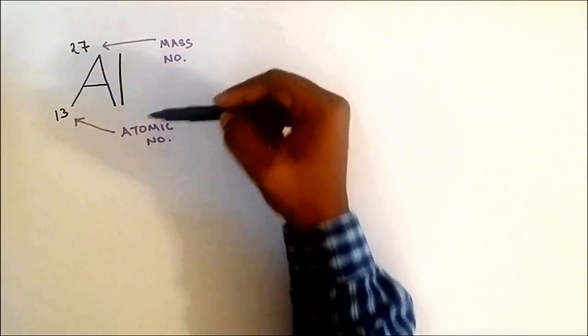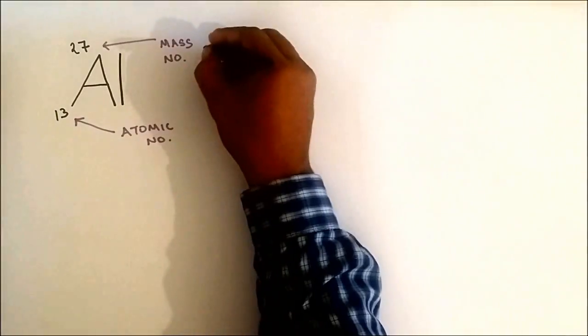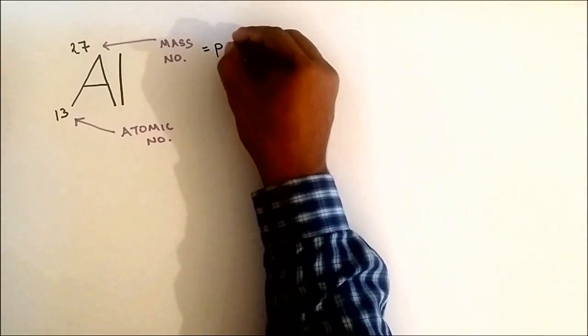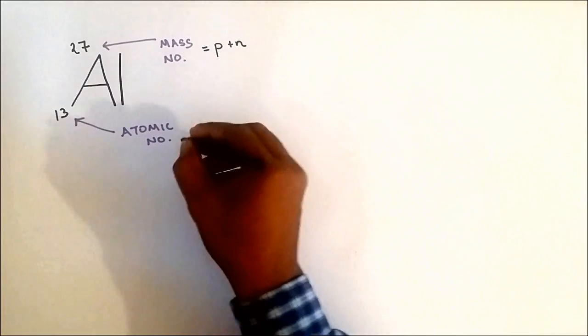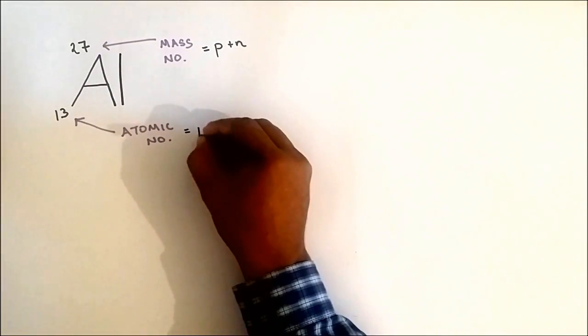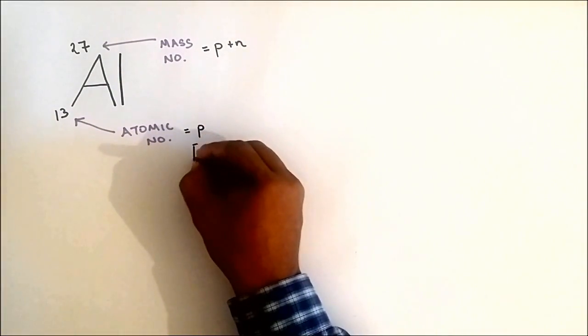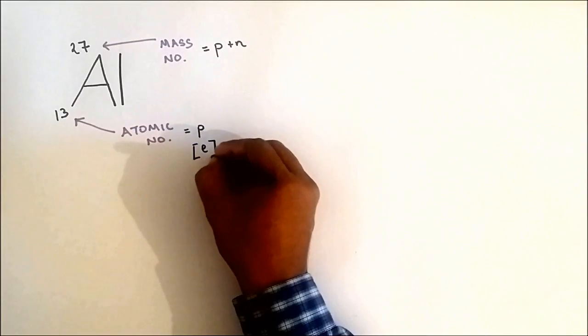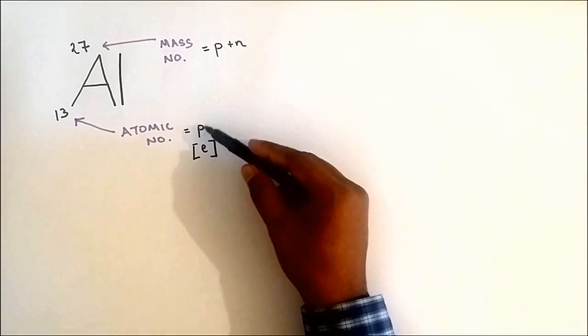The mass number is the number of protons and neutrons. Atomic number is the number of protons, but in an atom it's also the number of electrons because the number of protons and electrons are the same.